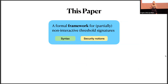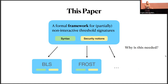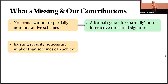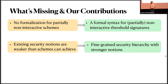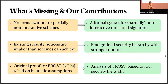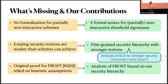In this paper, we propose a formal framework for partially non-interactive threshold schemes, introducing a formal syntax and a hierarchy of security notions applicable to BLS, FROST, and other schemes. Prior to this work, there was no formalization for partially non-interactive schemes. We provide the first formal syntax, and note that existing security notions were weaker than what the schemes can achieve. We also note the original proof for FROST relied on heuristic assumptions, so we analyze FROST's security based on our hierarchy. We also show BLS achieves a stronger notion of security than previously realized, also implied by concurrent work of Jens Groth.